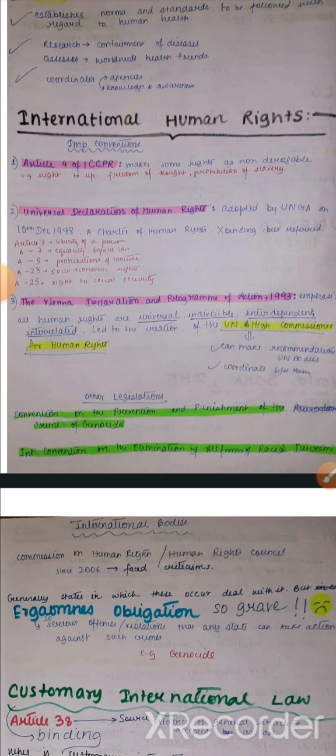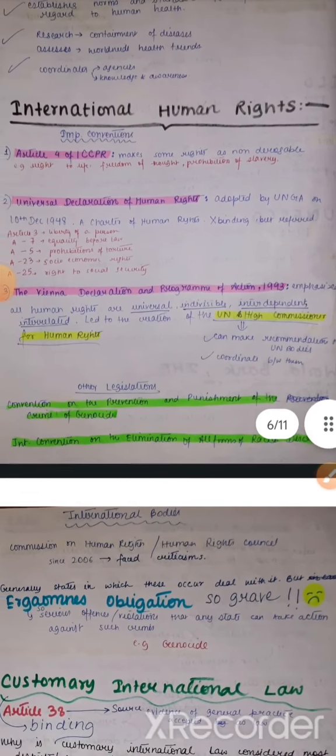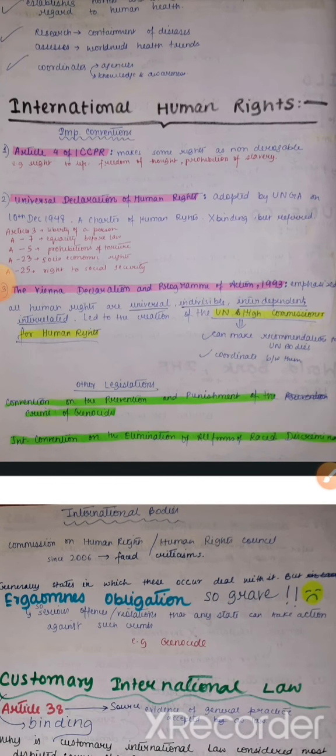Third, the 1993 Vienna Declaration and Programme of Action. This emphasized that all human rights are universal, indivisible, interdependent and interrelated. These four very important words you have to write whenever writing about this 1993 Declaration.